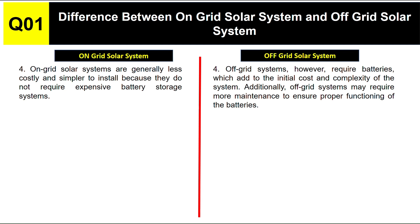Off-grid solar systems require batteries, which add to the initial cost and capacity of the system. Additionally, off-grid systems may require more maintenance to ensure proper functioning of the batteries. The cost of the off-grid solar system is higher than the on-grid solar system because battery storage is involved, and maintenance is also high due to the additional upkeep required for the batteries.